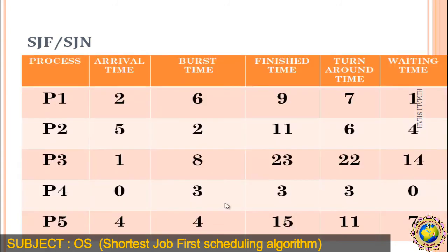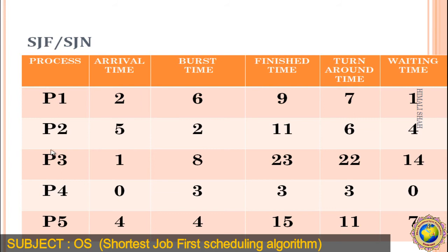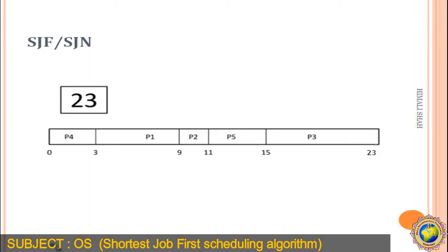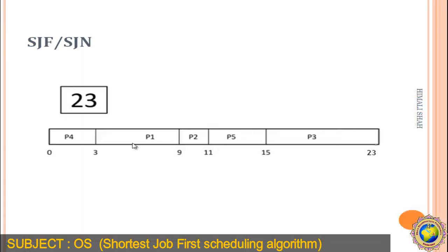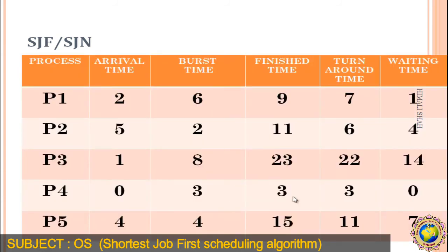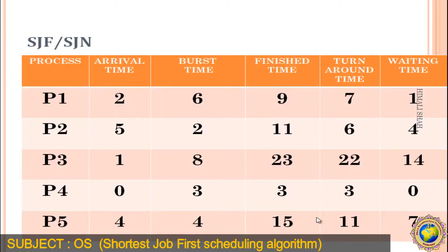Now we make a table with columns: Process, Arrival Time, Burst Time, Finish Time, Turnaround Time, and Waiting Time. The finish times are: P1 = 9, P2 = 11, P3 = 23, P4 = 3, and P5 = 15.